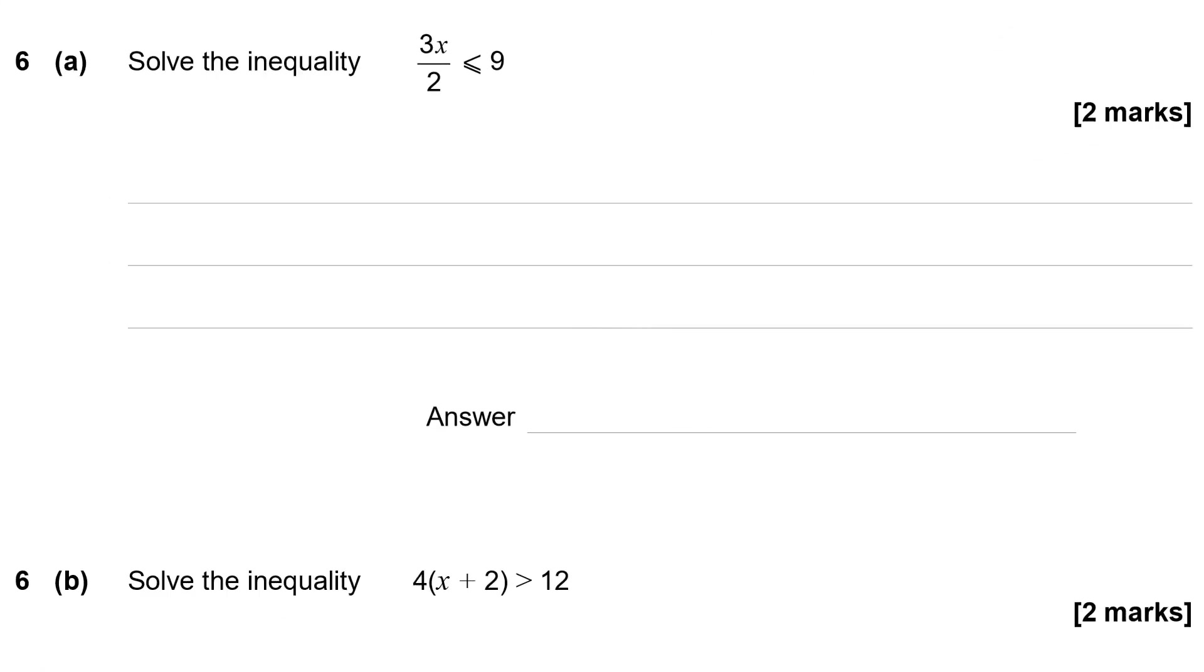Question 6a. Solve the inequality 3x divided by 2 is less than or equal to 9. Now as long as we don't divide through by a negative number we can treat these pretty much the same way as we solve any linear equation. So the first step I'm going to do is to take that 2 and cross multiply it. So that's going to give me 3x is less than or equal to 9 times 2 which is 18. And then dividing both sides by 3 is going to give me x is less than or equal to 6.